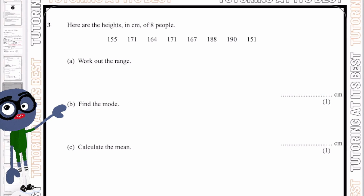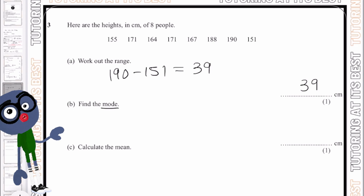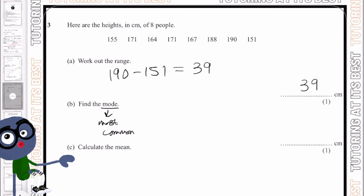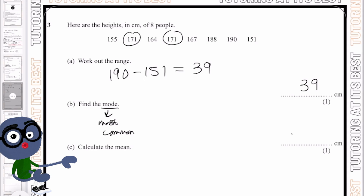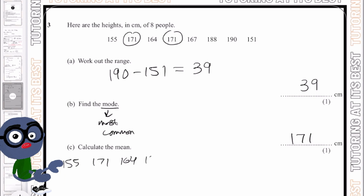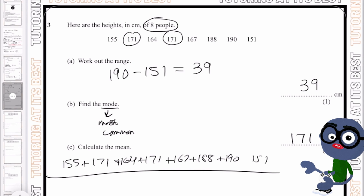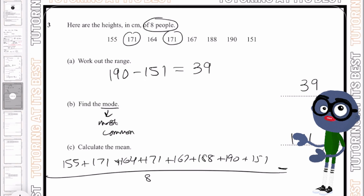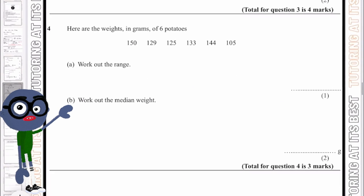Question three: the range is 190 minus 151, which gives us 39 centimetres. For the mode, the most common number is 171, as it occurs twice. For the mean, we add all the numbers together and divide by 8, giving us 169.625.